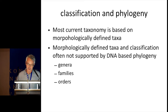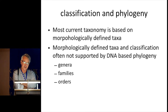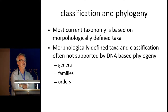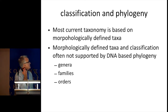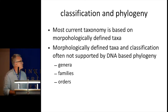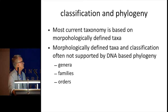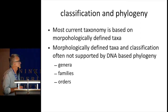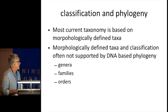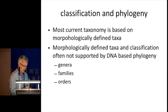I'm going to start with four slides that set the scene in terms of where Leotiomycetes taxonomy and classification sits at the moment. The first of these is about classification and phylogeny. Most of the current taxonomy we have to use is based on morphologically defined taxa, but those morphologically defined taxa and the classifications based on them are often not supported by DNA-based phylogeny, especially for taxa at the level of genus, family, and order.